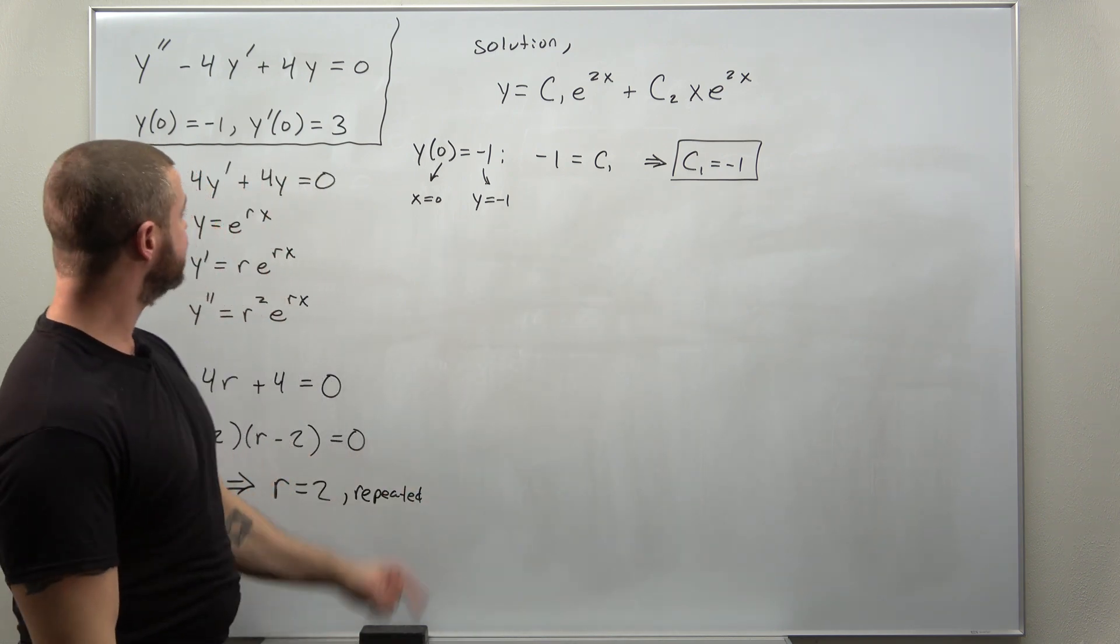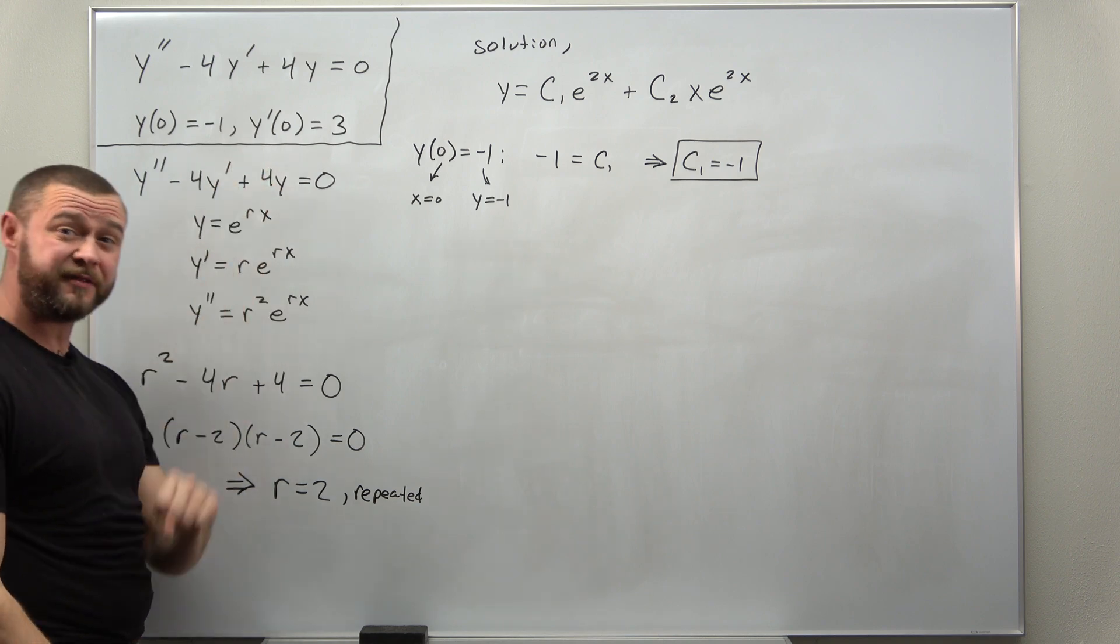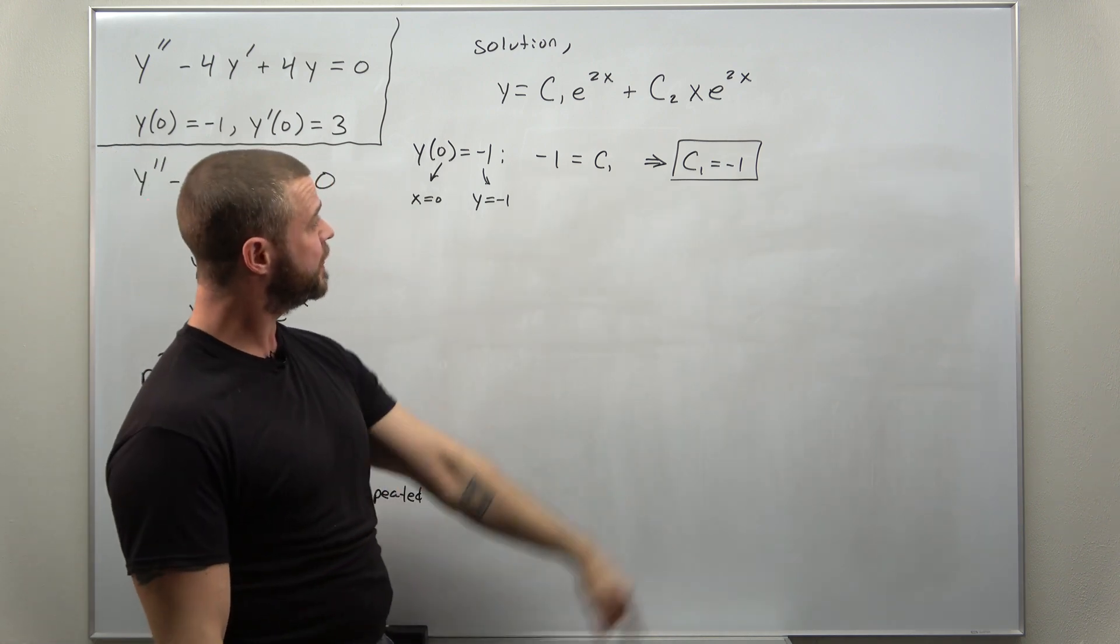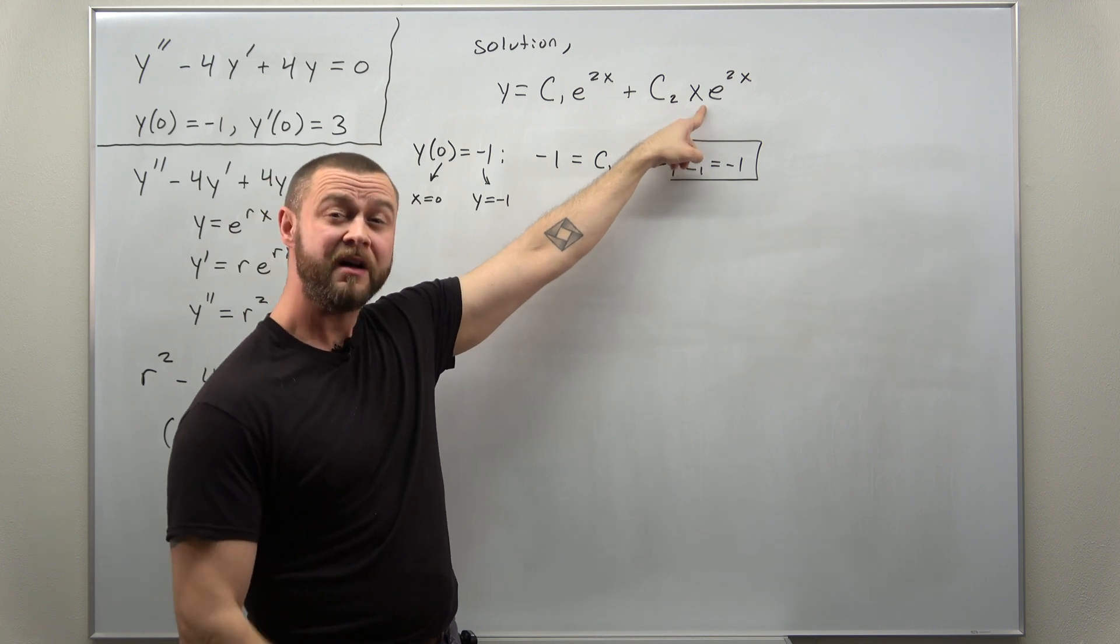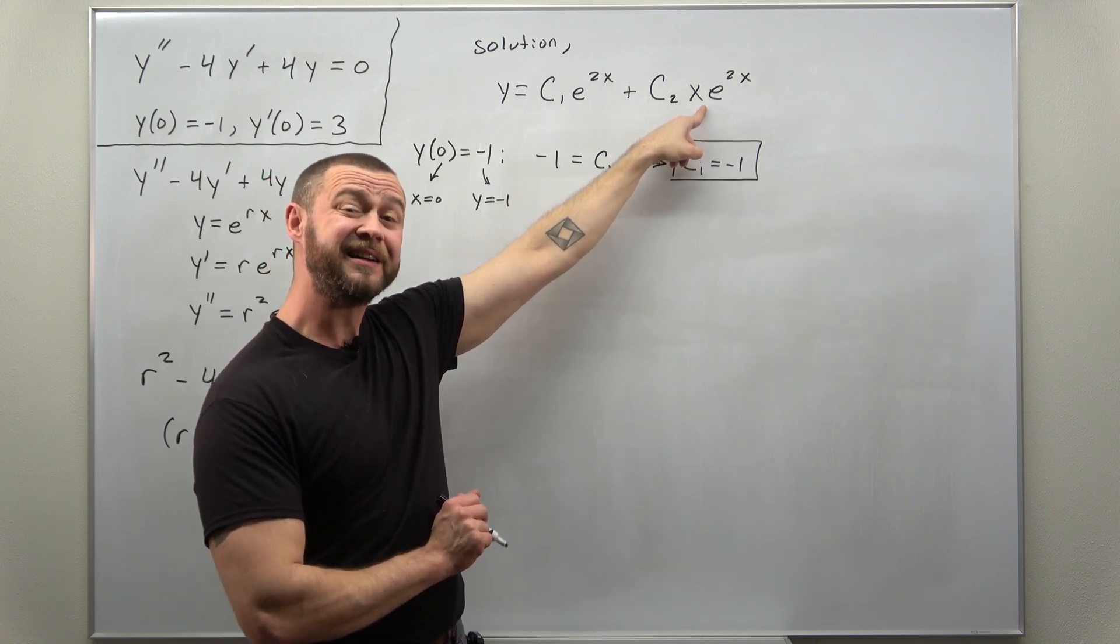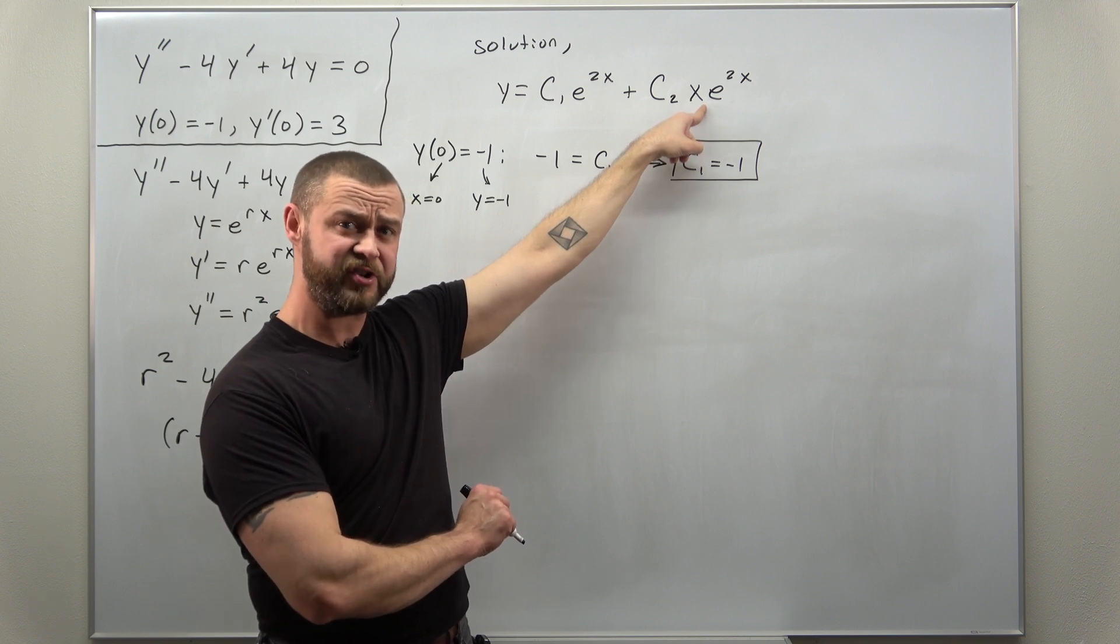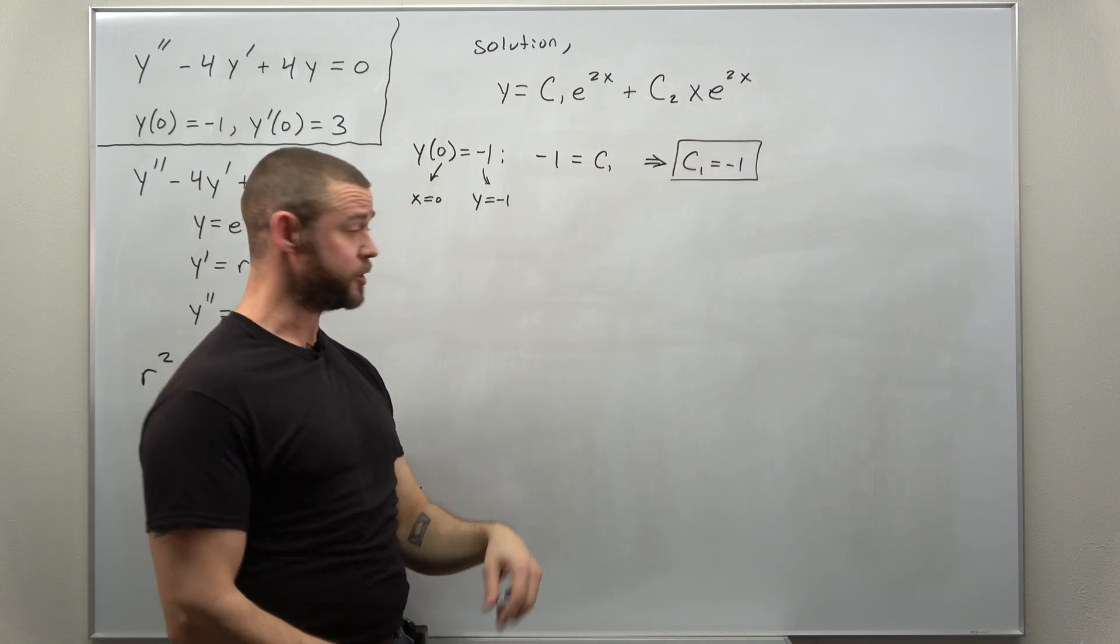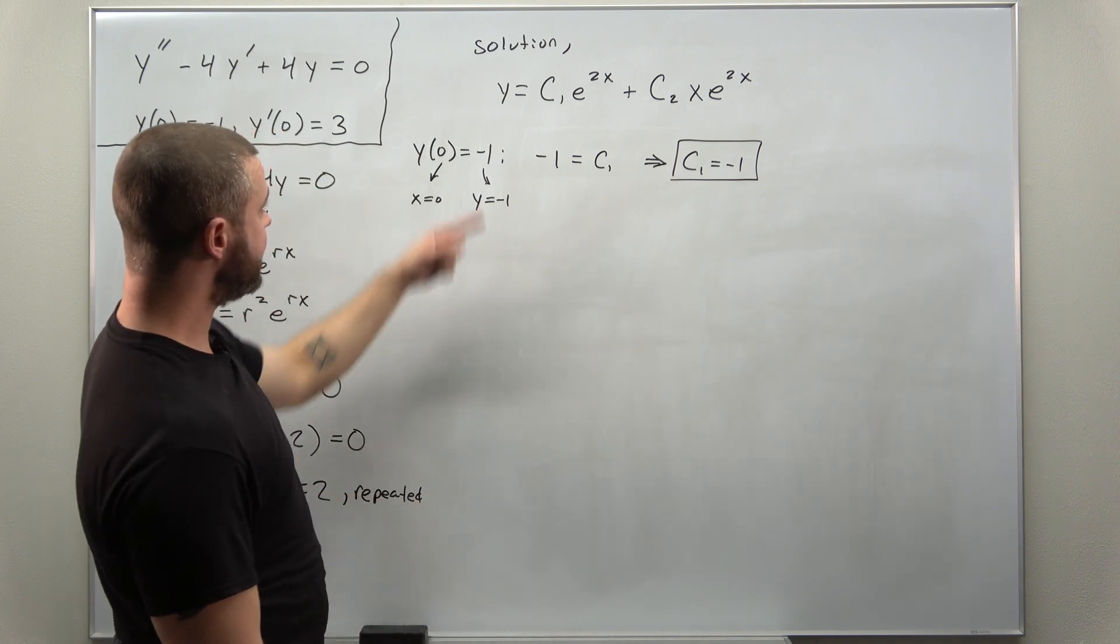Notice in order for us to make use of the derivative initial condition we have to calculate the first derivative. This term is going to require the product and chain rules to differentiate. That's where the work lies for this type of solution. So let's go ahead and do that.